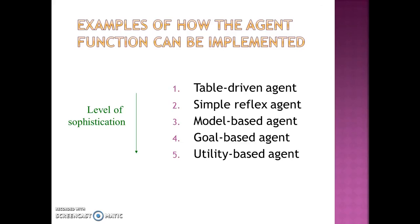We have five agent architectures. Out of them, model-based, goal-based and utility-based are the ones which keep track of the unseen part of the world by having the model's information — that is, knowledge of how the world evolves irrespective of the agent and what are the agent's actions' effects on the environment.